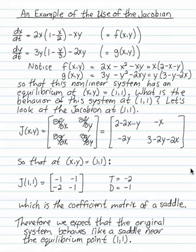Look at an example where you use the Jacobian to examine an equilibrium point of a non-linear system. Let's look at this system right here, which represents two populations with carrying capacities that detract from each other's growth.